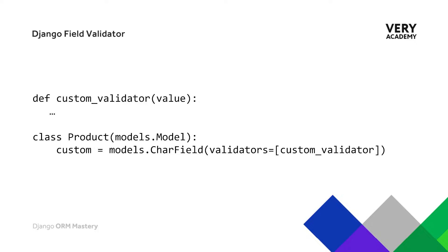We will discuss field validation in more detail later in the course, but to give a general overview: first we need a Django model to perform validation; next we develop a validator function which takes in the field value and returns it if it satisfies the custom validation, otherwise returning an error message; and finally we integrate our validator function with the appropriate field.